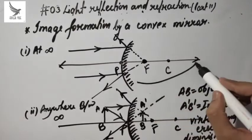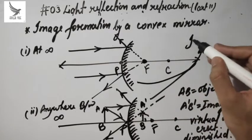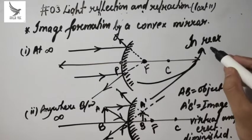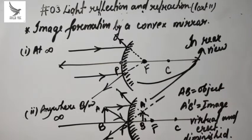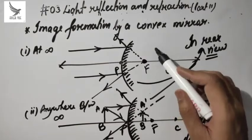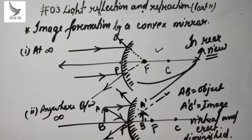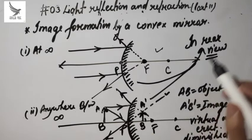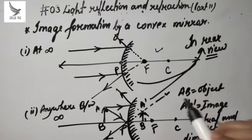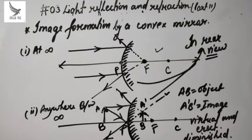So convex mirrors are used in rear view mirrors of vehicles. You must have seen that to view vehicles coming from behind, drivers use a convex mirror — because it makes the image of any object smaller, allowing a large area to be covered in a small mirror. Distant vehicles appear small but more of the road is visible. That is one of the reasons the rear view mirror of vehicles is a convex mirror.